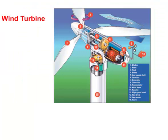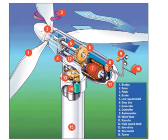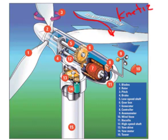Wind turbines — we have a lot of these in Pincher Creek. It's the wind that makes them turn. The wind is moving, so as it travels across the blades, we have kinetic energy. That causes the huge blades of the windmill to rotate, producing more kinetic energy.